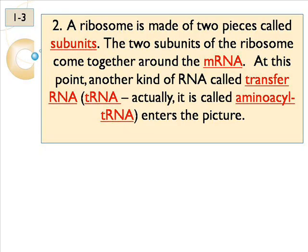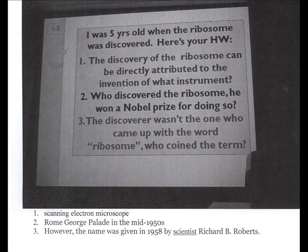The ribosome has two subunits — a big one over a smaller one — and the messenger just slips between them. Like reading braille, it reads right along and is translating. The transfer RNA is bringing in amino acids. The real name is aminoacyl tRNA — I put it on there because that's the real name, but we just call it tRNA. It has an amino group attached to it; when the amino group has been used to make protein, it's been removed.